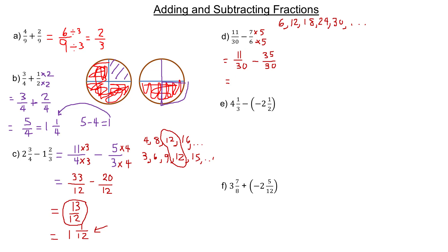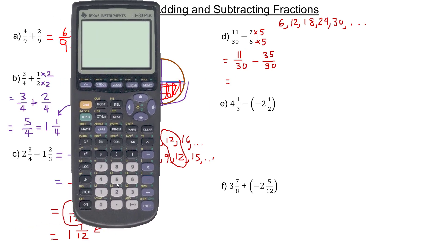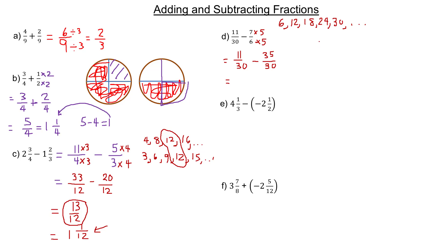Now we can subtract them because they have the same denominator. So 11 minus 35 is negative 24. If you're not using a calculator, remember any subtraction can be rewritten — what we're actually doing here is taking 11 and subtracting 35.